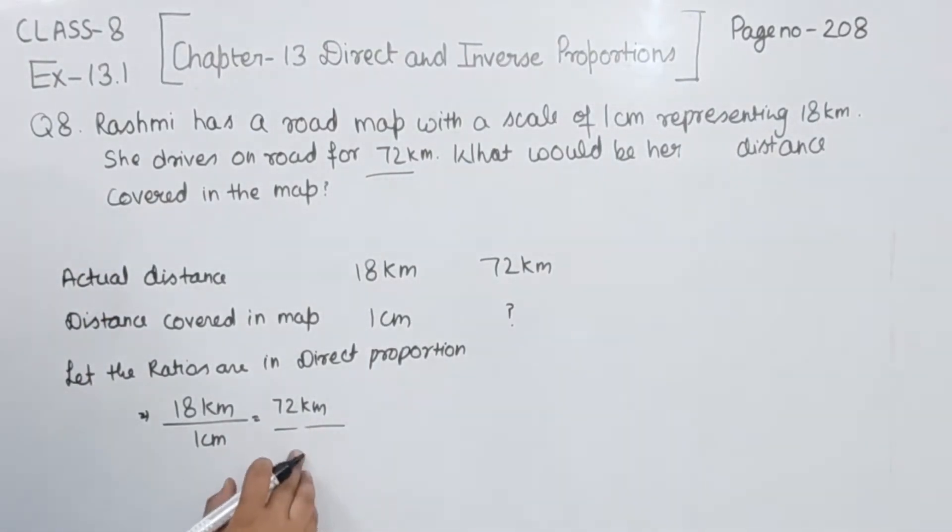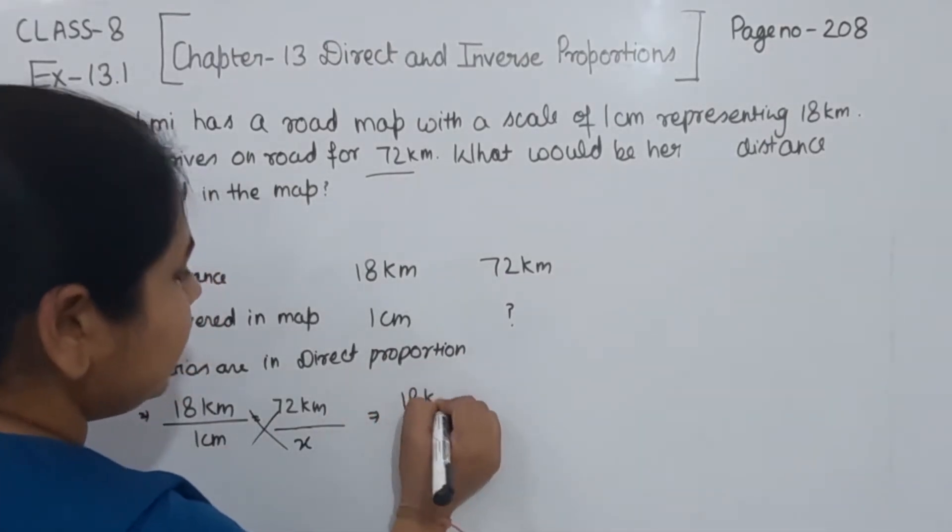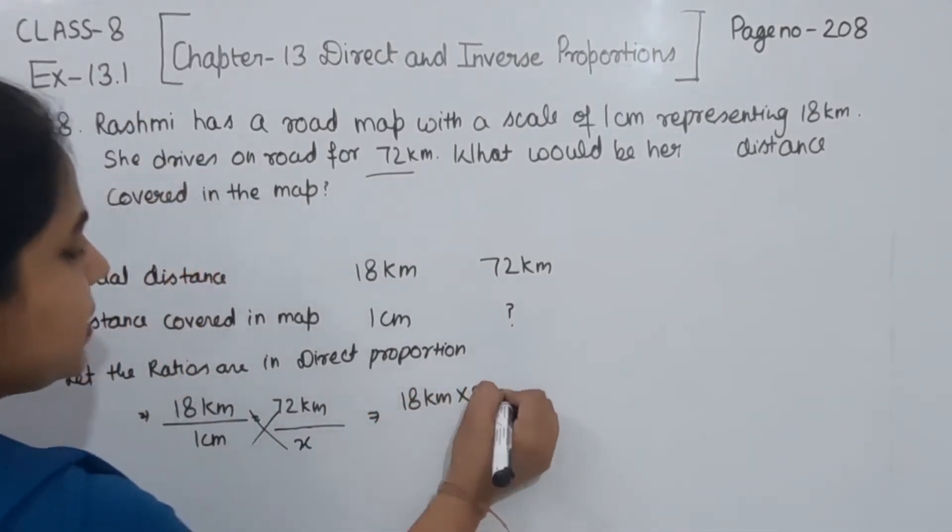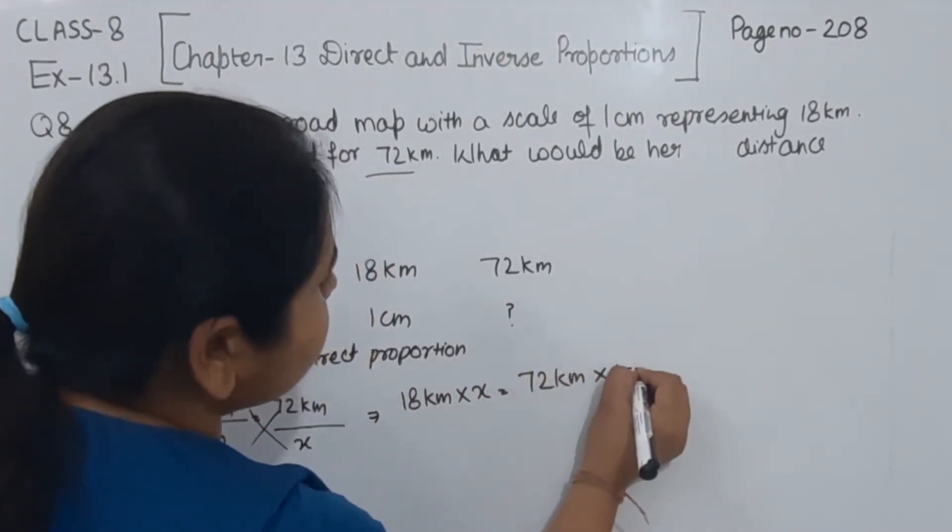We are not having here, I am going to write here, let this one as equal to x. Now I am going to cross multiply. So this one we are having as 18 km multiplied by x, and this one we are having 72 km multiplied by 1 cm.